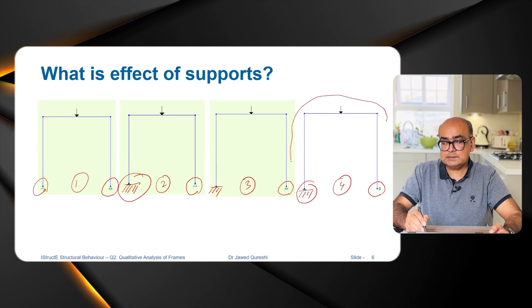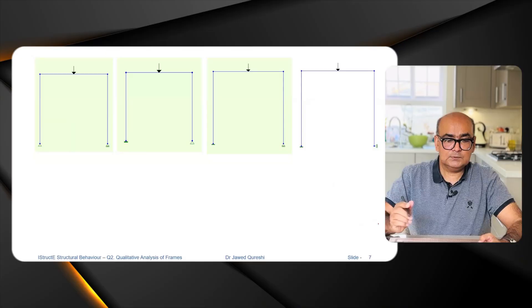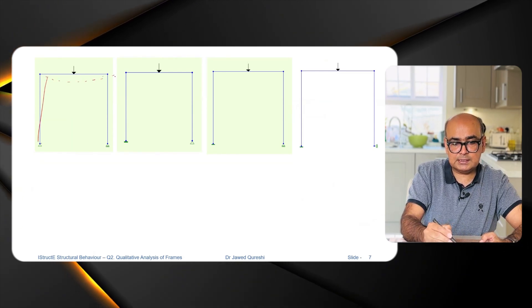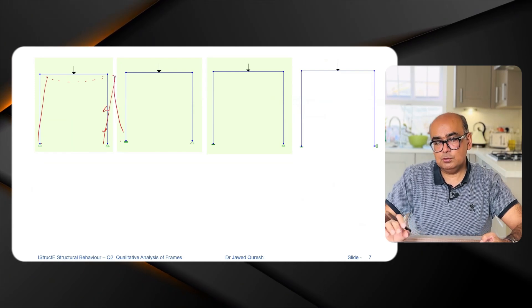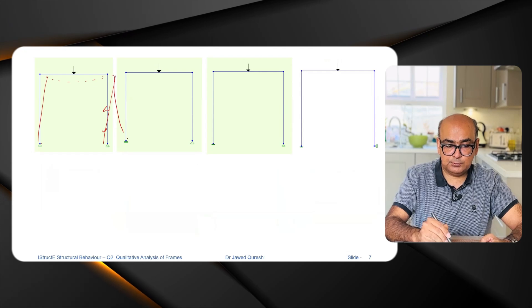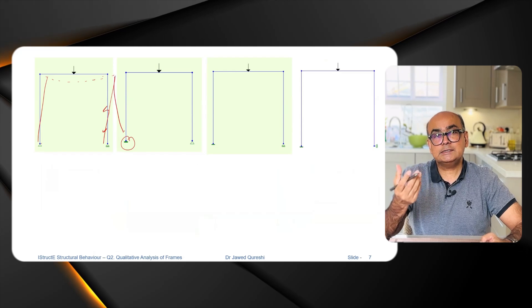You will see what difference these support conditions make not only to the deflected shape but to the bending moment diagram as well. For the first case, the frame is going to deflect like this — from here to here it will be a straight line, and from here it will go outwards, not inwards. For the second case, we have a fixed support on the left side, and by following the joint conditions there will be no rotation at the fixed support.